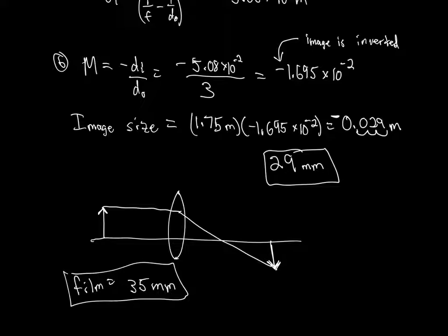The negative just means your picture is upside down. If you do film photography and develop your pictures, you'll find they're inverted - but you just turn the picture around. This also happens in astronomy: all images through a telescope are upside down, but who cares, a star is a circle either way.